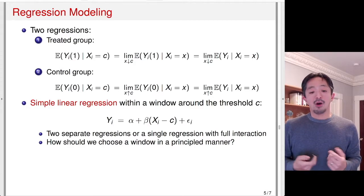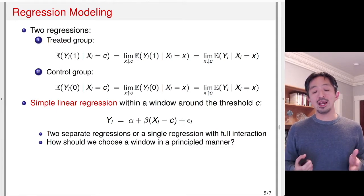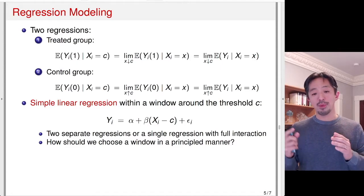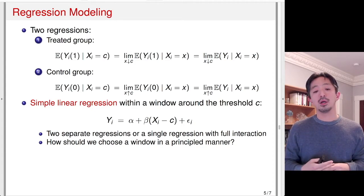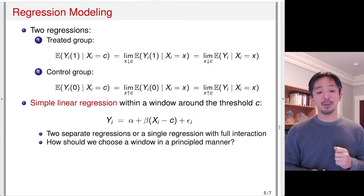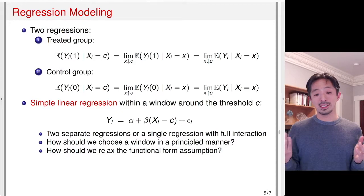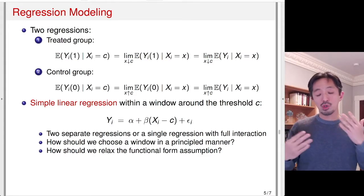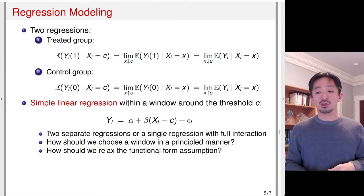The question is how should we choose a window in a principled way. Often researchers would pick say plus or minus two percentage points, but the estimate is going to depend on how wide that window is around the threshold. We may also be worried about whether simple linear regression is a good linear approximation. You might want to use some kind of nonparametric regression to allow for flexible functional forms. You might think higher-order polynomial regression — including a square term or cubic term of the forcing variable — might be a good idea.